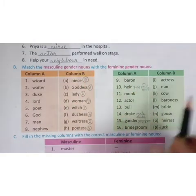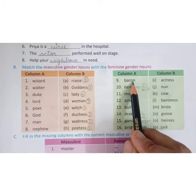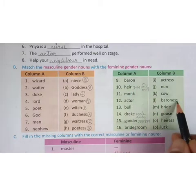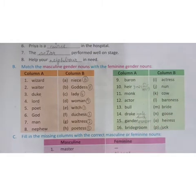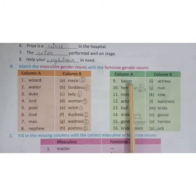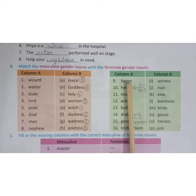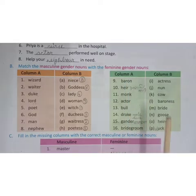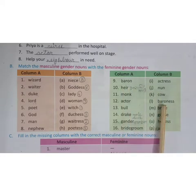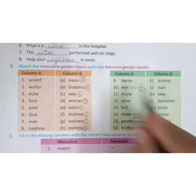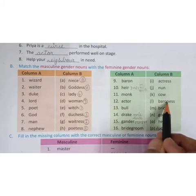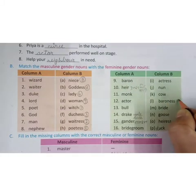Now we will see the second column. Baron. Baron ka hoga baroness. Baron's meaning is a very powerful businessman. If he is male, he will be called baron. And if she is a woman, then she will be called baroness. So this is the ninth answer.